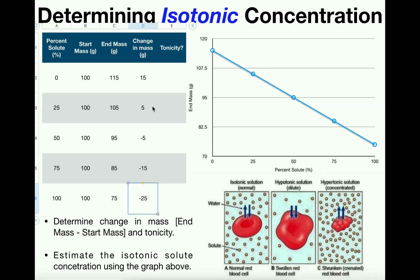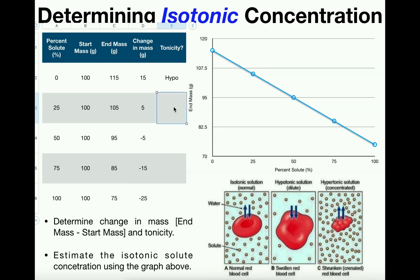For the positive change in mass values — the first two solutions — is the solution hypotonic or hypertonic? We started with a mass of 100 grams and the mass actually increased. The only way that could happen is if water came into the cell. That extra 15 grams is coming from water, so the solution has to be hypotonic. Since the other one is also positive, it's also in a hypotonic solution.